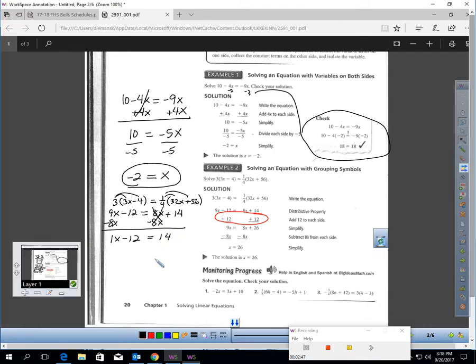Now you have 1x minus 12 equals 14. This should be easy now. We just have to isolate the variables. Let's add 12 to each side. So 1x would equal 26. And I can divide by 1 and x is 26. I can check it to make sure I'm doing it correctly. If I plug in 26, I am getting a true statement.